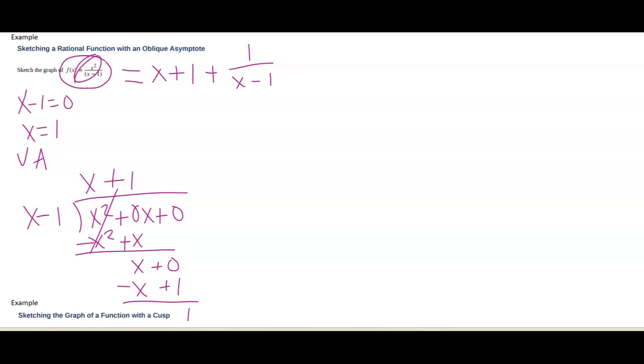So over time, as x goes to plus or minus infinity, this term over here goes to zero. And so this is going to model the behavior of the line x plus one, because I have at the end something that goes to one over something that gets really big. So what does that look like on the graph? I have a vertical asymptote at x equals one. And then my oblique asymptote or my slant asymptote is going to go through x plus one. And so it's going to look a little something like this.